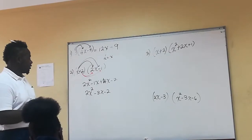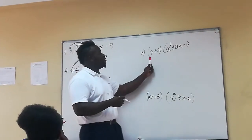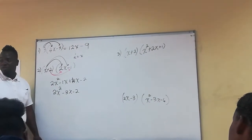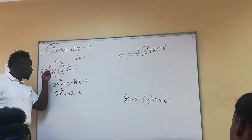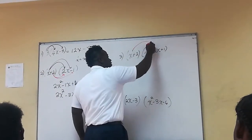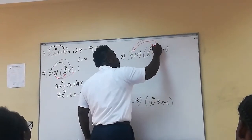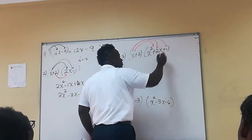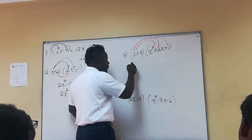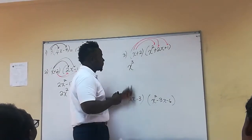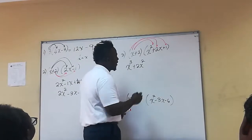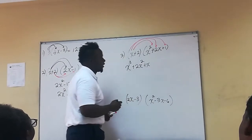So that was the warm-up. Now we're going to be multiplying a binomial times a trinomial. We multiply the first element by each element in the second bracket — the same process. So you're going to multiply x times x squared, x times 2x, and x times positive one. x times x squared is x cubed, x times 2x gives us 2x squared, and x times 1 gives me 1x.